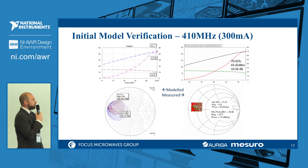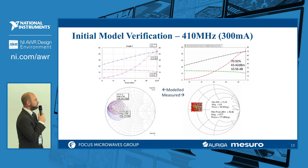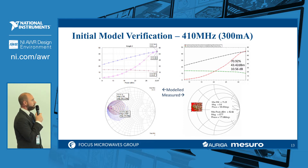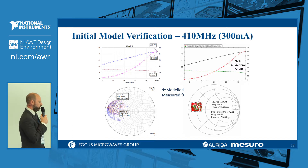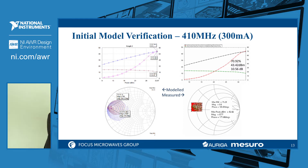For the last initial bias point at 300 milliamps, we have a very good fit in all three cases — power added efficiency, output power, and gain — and the same holds in the impedance space, with a very good fit overall.